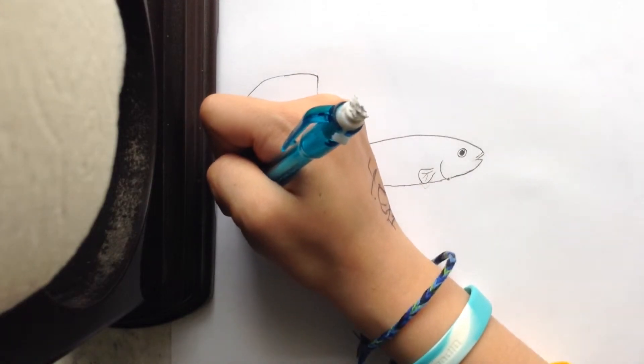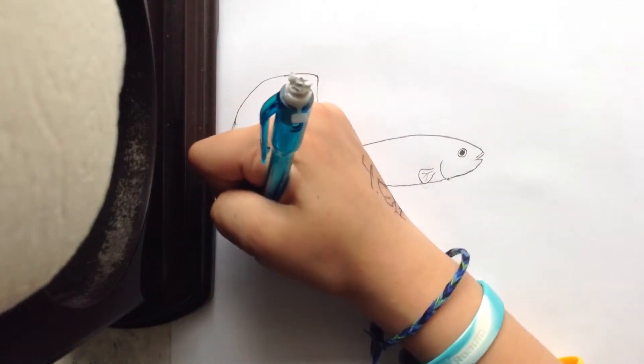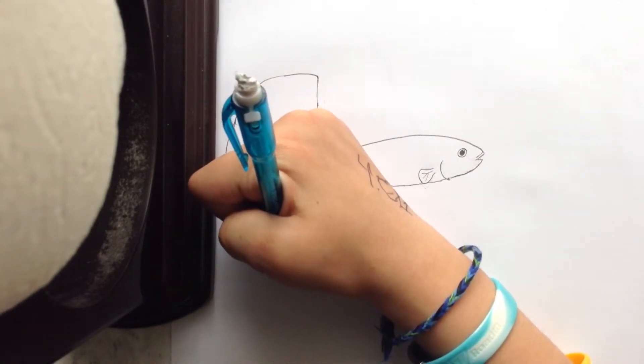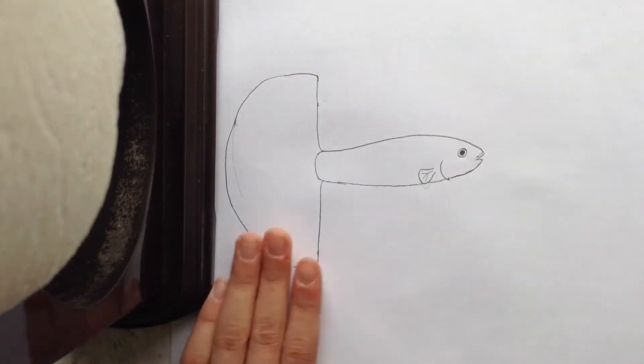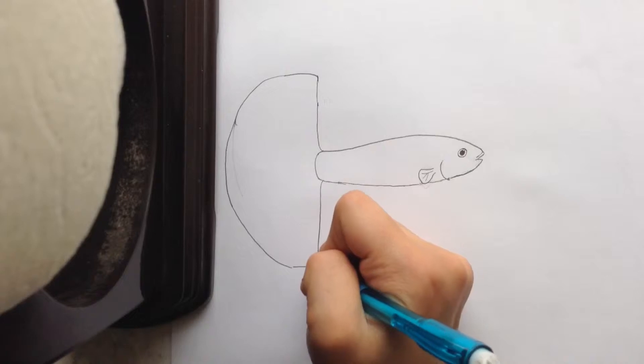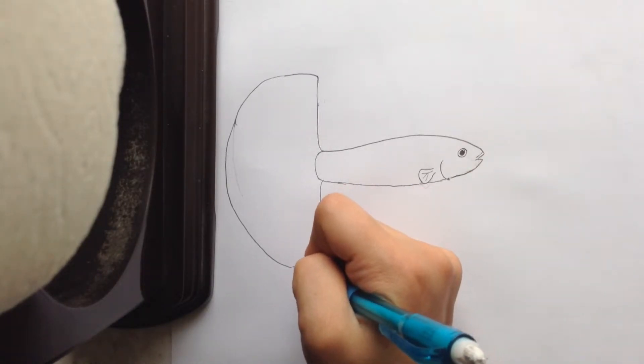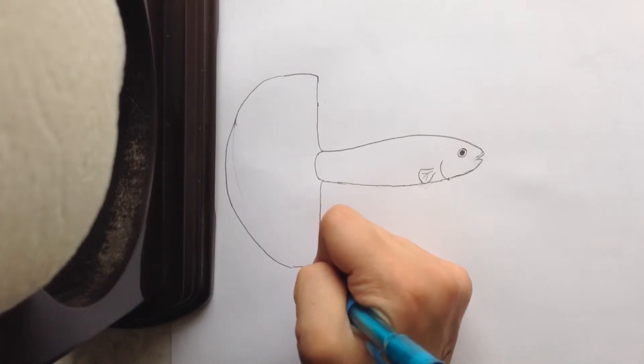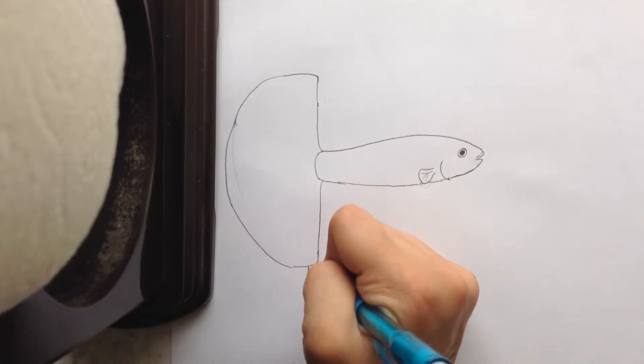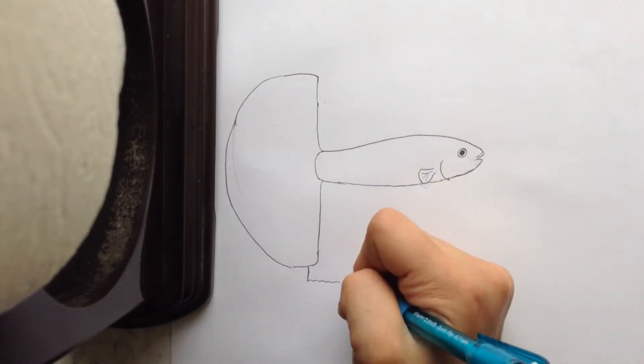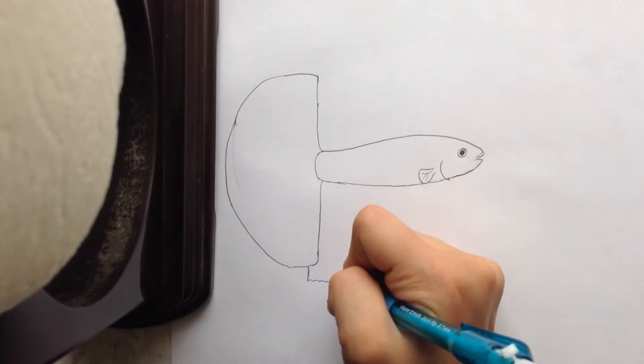I'm not going to color this one because I don't feel like doing that right now, and this is how to draw, not how to color. The next thing is you're going to do this part here. You can do it straight, but I like to do it a little curvy to add detail.